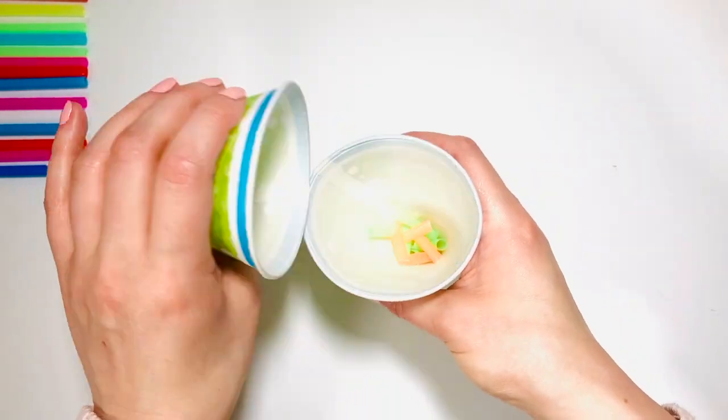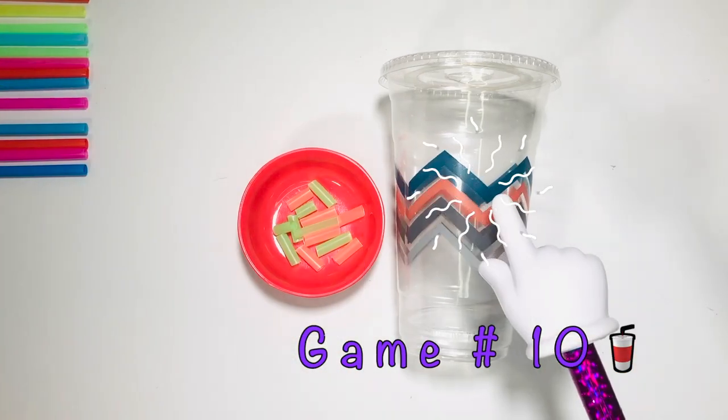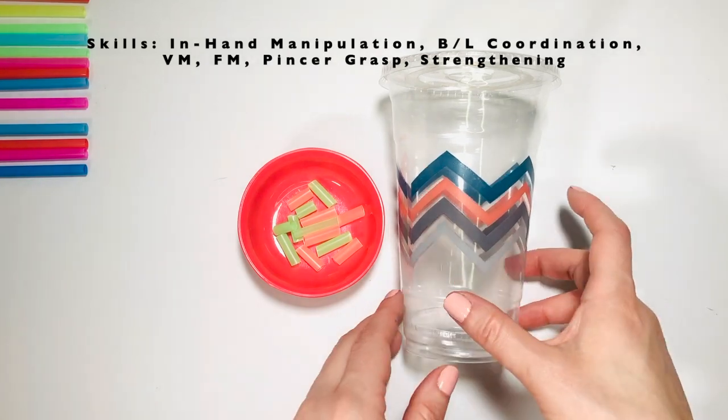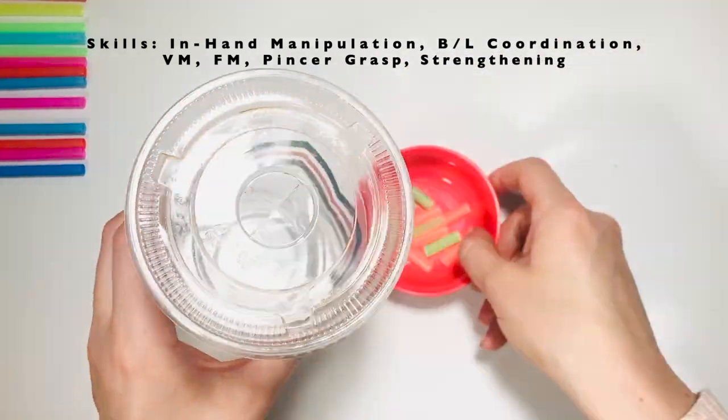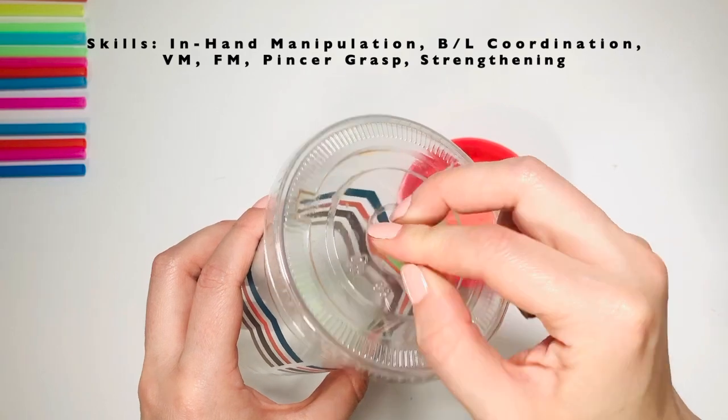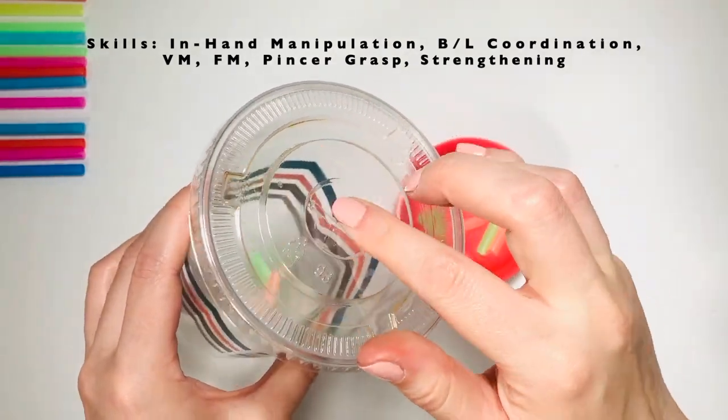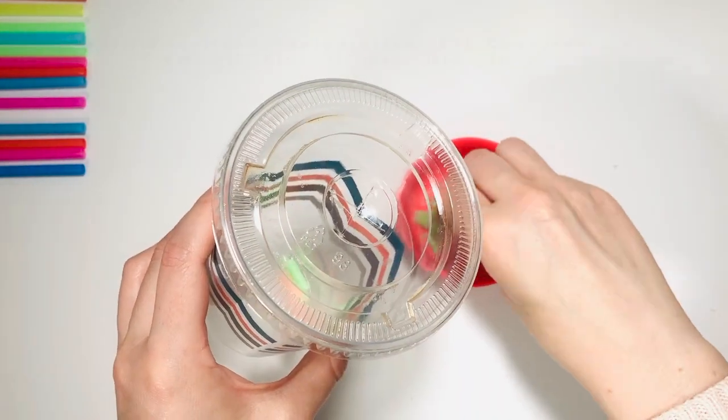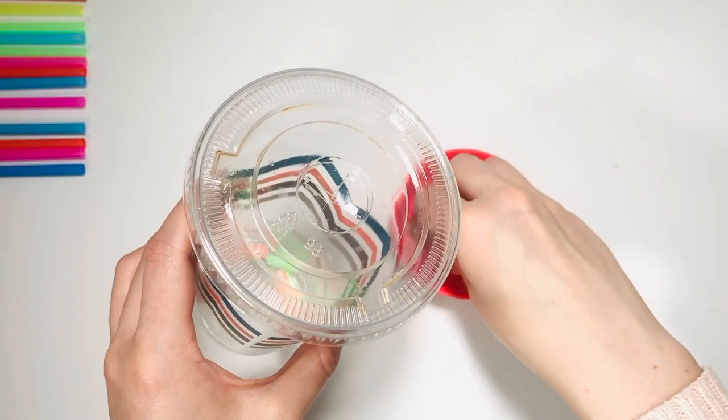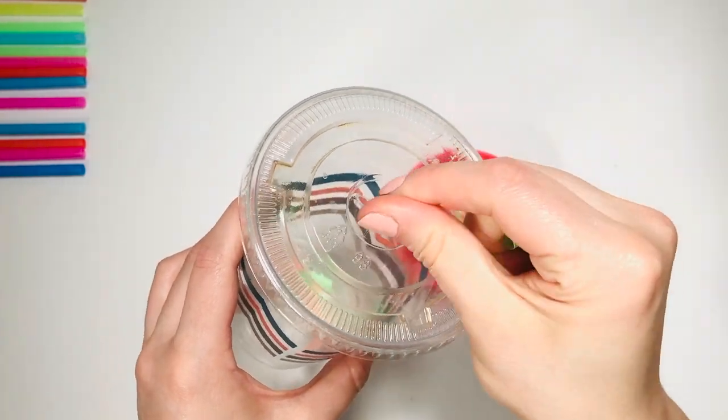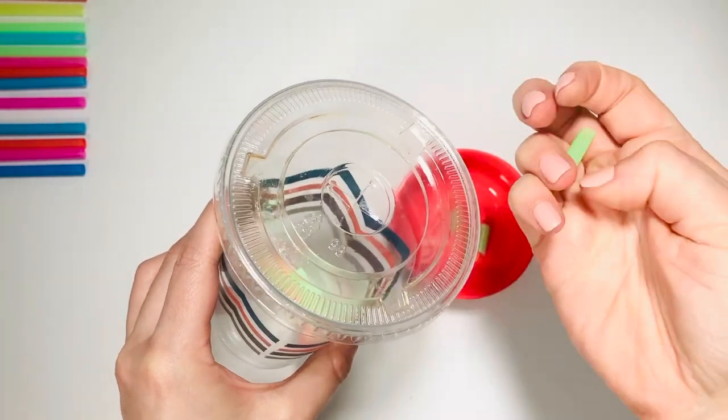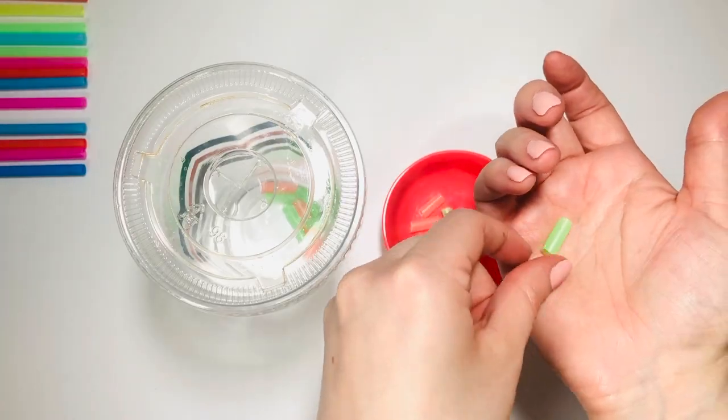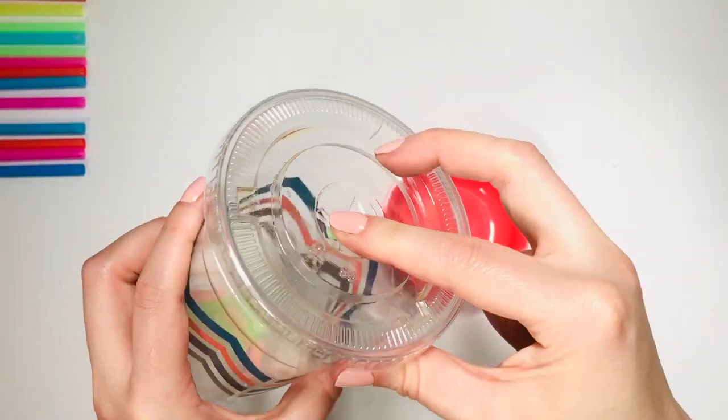For game number ten you need a cup and some cut up straws. The cup should have a lid with little opening. Push the straws inside the opening one at a time. You can work on transferring from palm to tip. You can work on isolation of thumb, index, and middle finger.